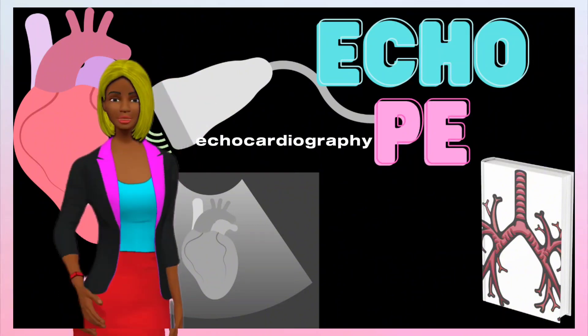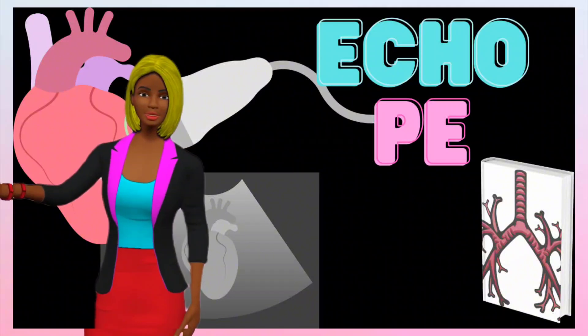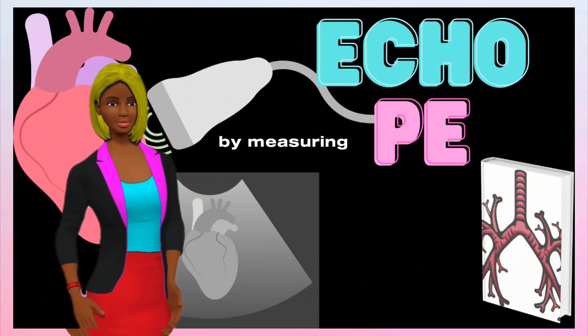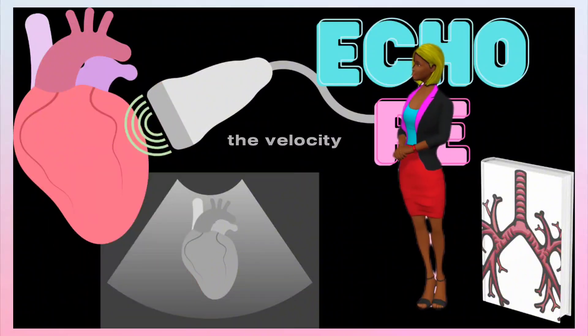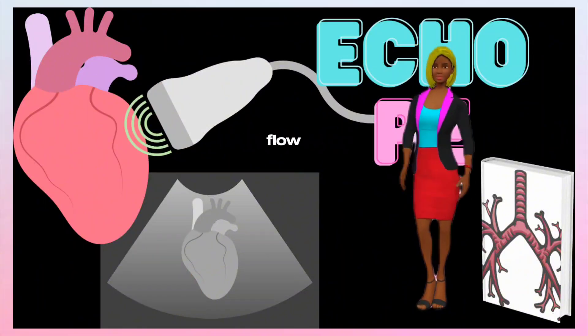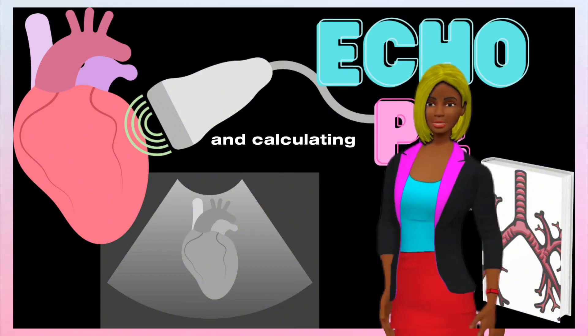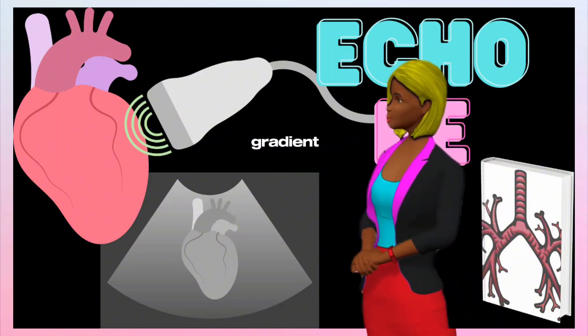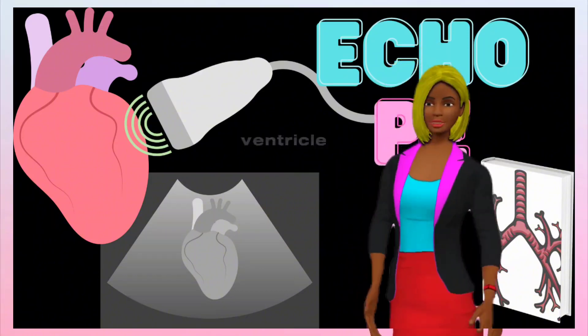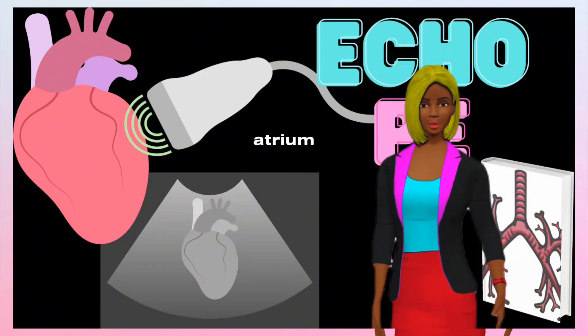Echocardiography can estimate the pulmonary artery systolic pressure by measuring the velocity of tricuspid regurgitation flow and calculating the pressure gradient between the right ventricle and right atrium.